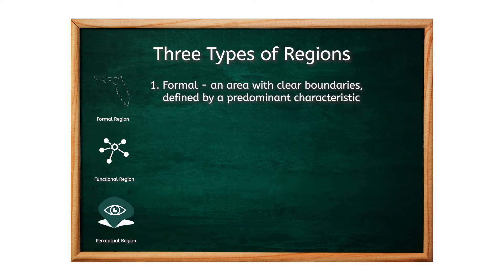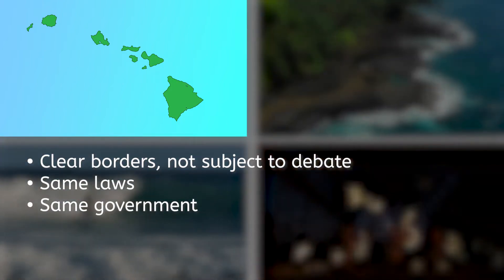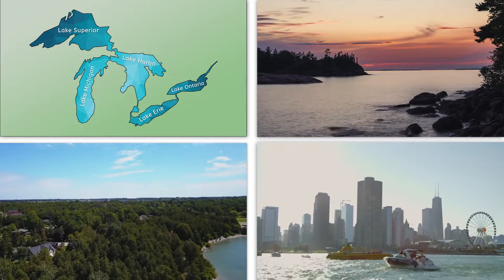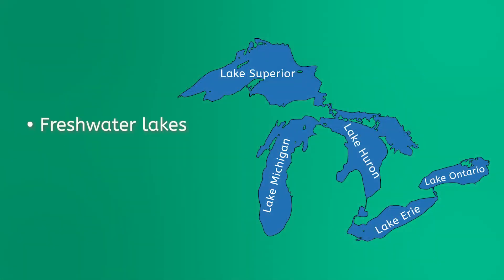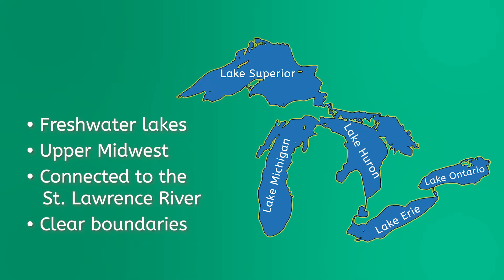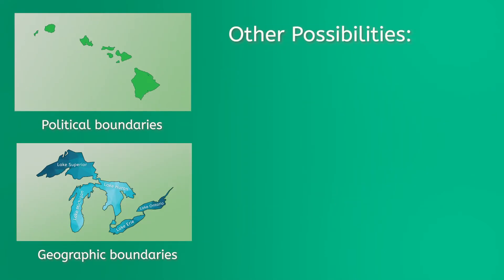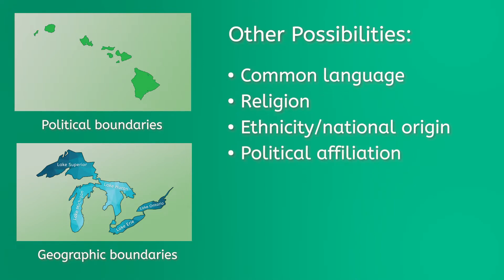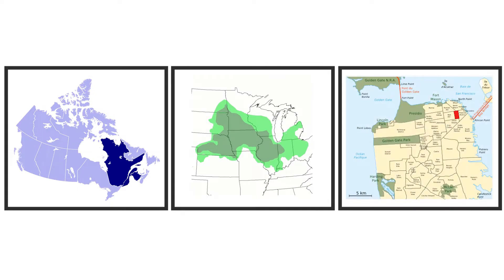A formal region is an area, usually with clear boundaries, defined by a predominant characteristic. The state of Hawaii, for example, is a formal region — within the state's borders, all people are subject to the same state laws and ruled by the same government. Another example is the Great Lakes, grouped together because they share geographical features: they're all freshwater lakes in the upper Midwest and connect to the Atlantic Ocean through the St. Lawrence River. Formal regions don't have to be based on anything specific — the common trait could be language, religion, ethnicity, political affiliation, or culture. French-speaking Canada, America's Corn Belt, and San Francisco's Chinatown are all examples of formal regions.